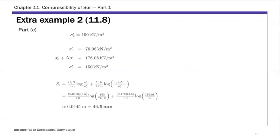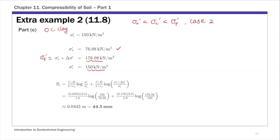For part C, same soil profile but a different pre-consolidation pressure. The initial effective stress is 76.08 and sigma f prime is 176.08. The pre-consolidation pressure is 150 kN per meter squared. This is again OC clay because sigma₀ prime is smaller than sigma c prime. However, for part C, the pre-consolidation pressure of 150 is smaller than the final effective stress sigma f prime of 176.08. So this is Case 2 — when loaded, the clay initially follows the recompression curve and then transitions to the virgin compression portion of the curve.